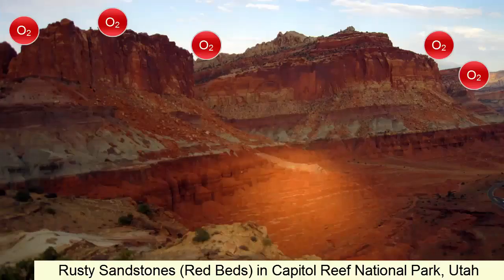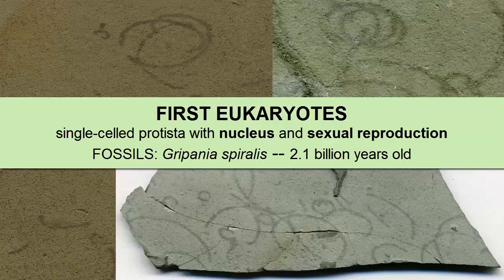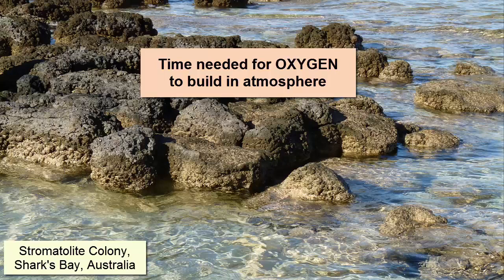The first step towards that advanced life was developing a nucleus and sexual reproduction. The oldest evidence we have of this evolution are fossils of Grypanius spiralis, found in 2.1 billion year old banded iron formations in Michigan. However, it was quite a long time before organisms like these really proliferated and cooperated to create multi-celled life, because it had to wait until the oxygen levels in the atmosphere built up enough to support the increased metabolism that goes along with multi-celled life. The stromatolites and other photosynthesizing bacteria still had a lot of work to do.